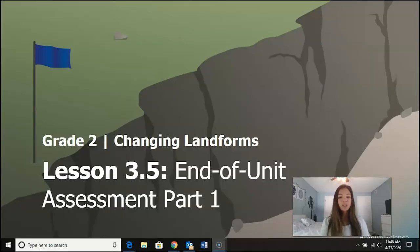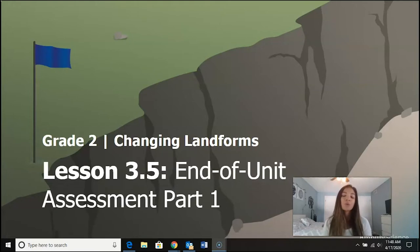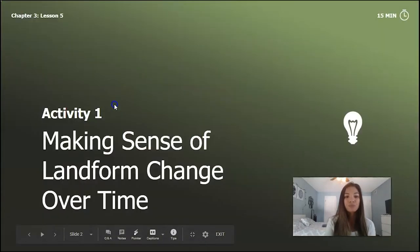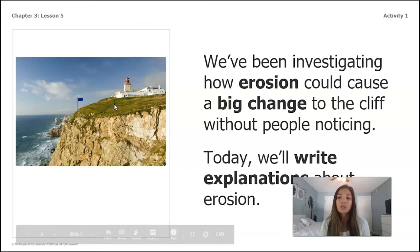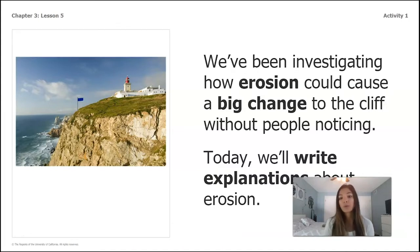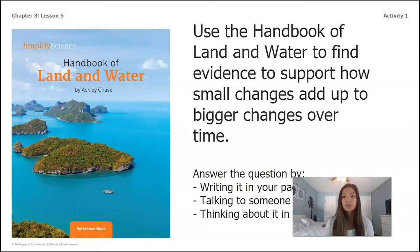Hi second graders, welcome back to the changing landforms unit. We actually skipped lesson 3.4 because a lot of it we were not able to do with the materials we have at home, so we're moving on to lesson 3.5, which is the end of unit assessment. We've been investigating how erosion can cause a big change to the cliff without people noticing. Today we're going to write our explanations about erosion and use the handbook of land and water to find evidence to support how small changes add up to bigger changes over time.